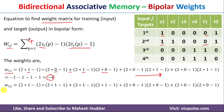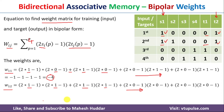Similarly, we solve W12, the second weight where I equals 1 and J equals 2. It becomes (2 times S1(P) minus 1) times (2 times T2(P) minus 1). For P equal to 1: S1(1) gives 1 and T2(1) equals 1. For P equal to 2: S1(2) equals 1 and T2(2) equals 1. Writing all remaining terms, we get W12 equal to plus 4.